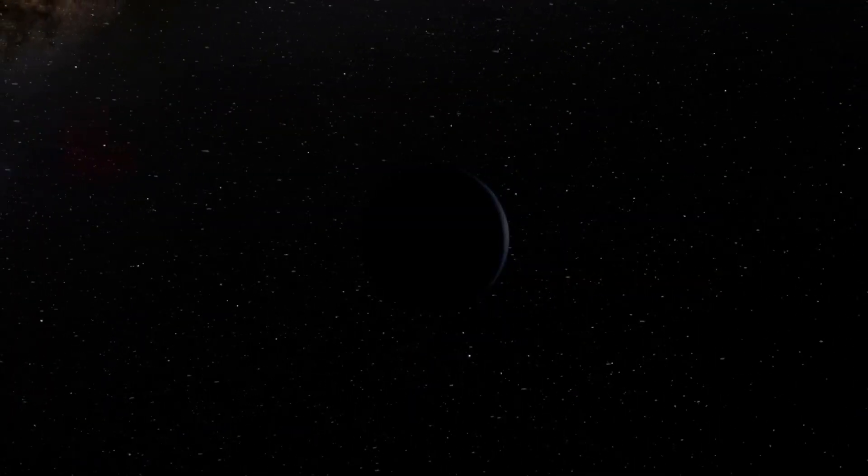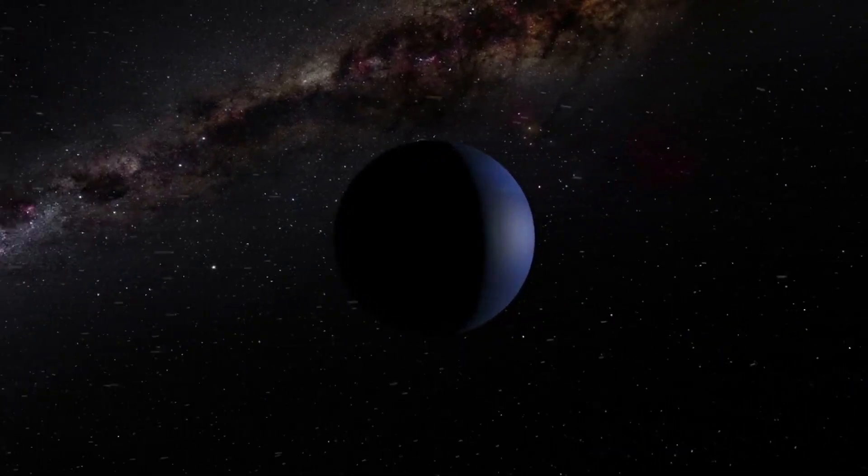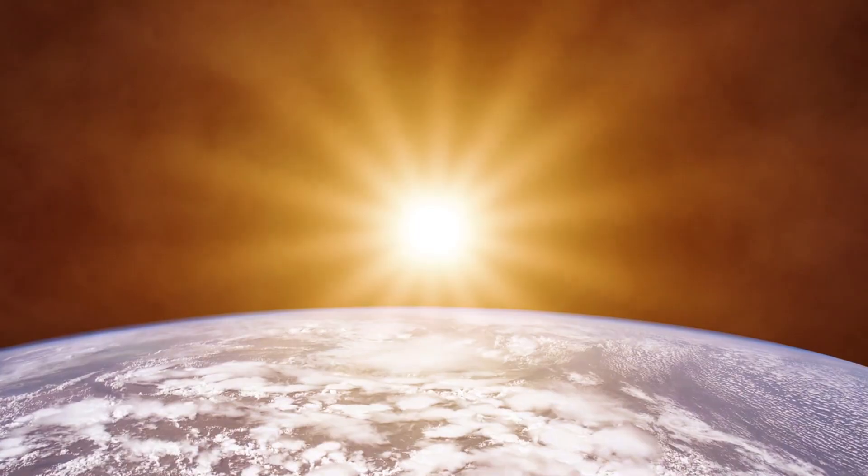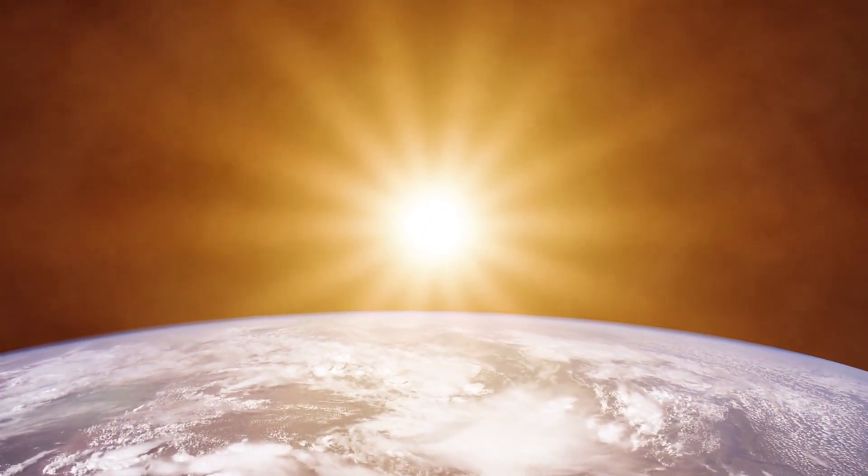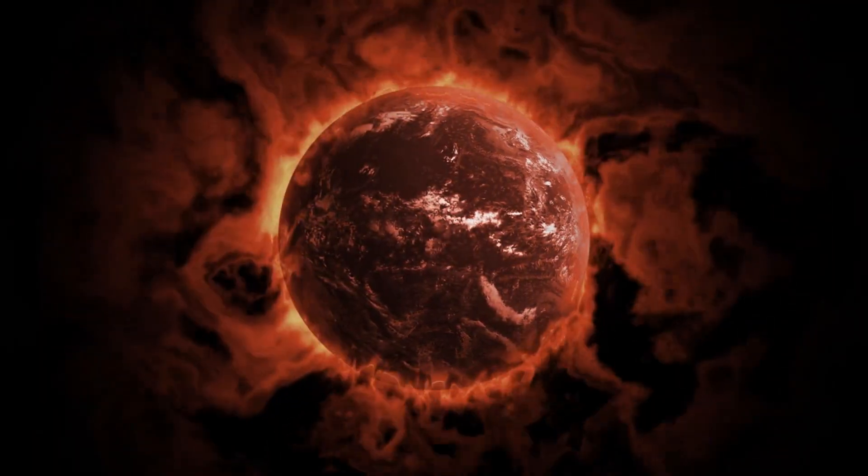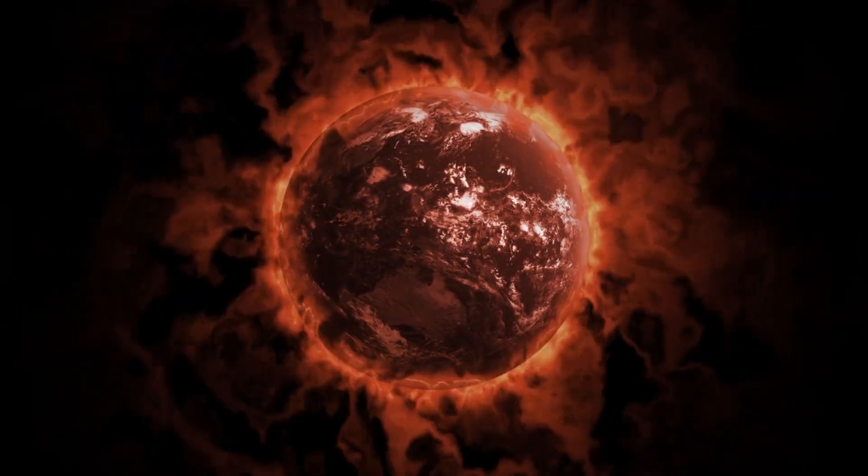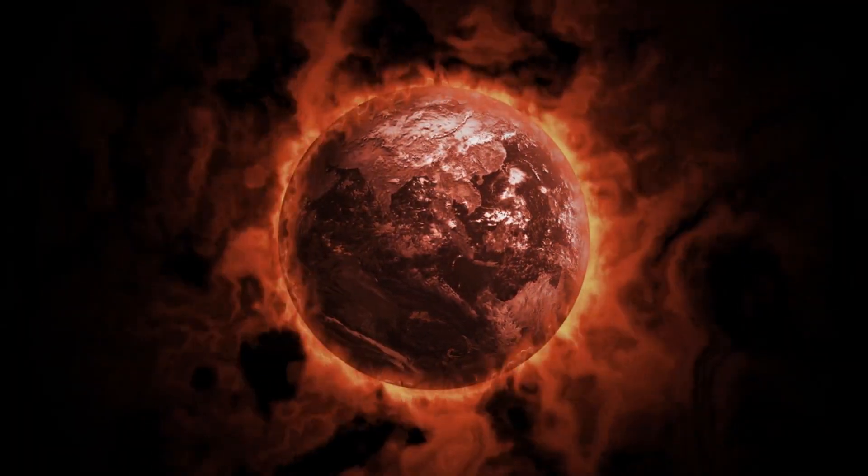And this brings us to something truly humbling. Those supersonic winds aren't just storms. They form a planetary conveyor belt. They tear heat away from the day side and hurl it across the planet, blasting it into the darkness. There is no cool refuge, no calm hemisphere. The entire world becomes a single circulating furnace. Day and night blur together into a uniform oven of destruction.